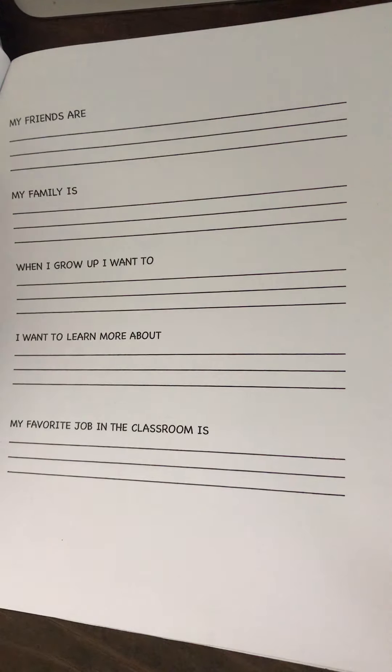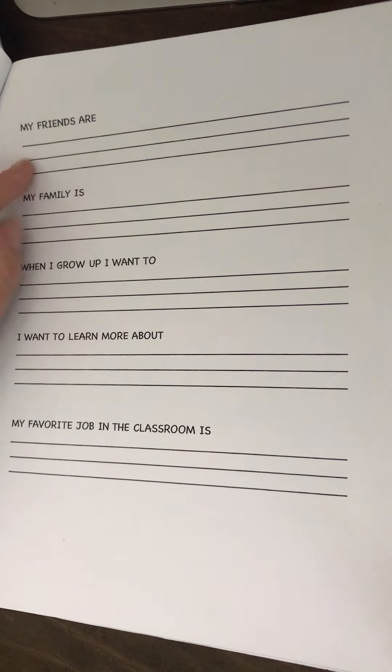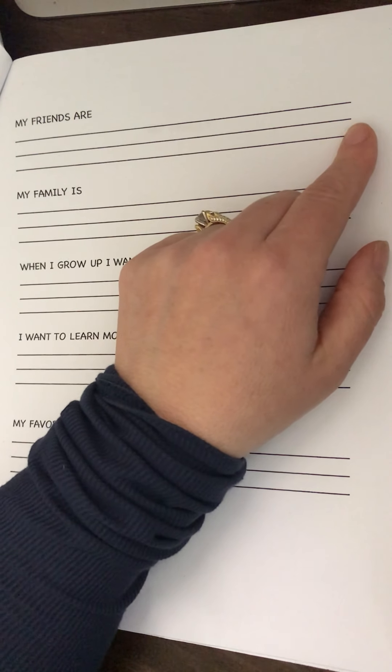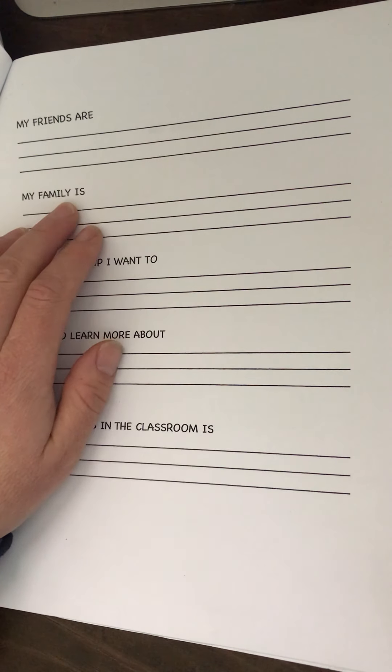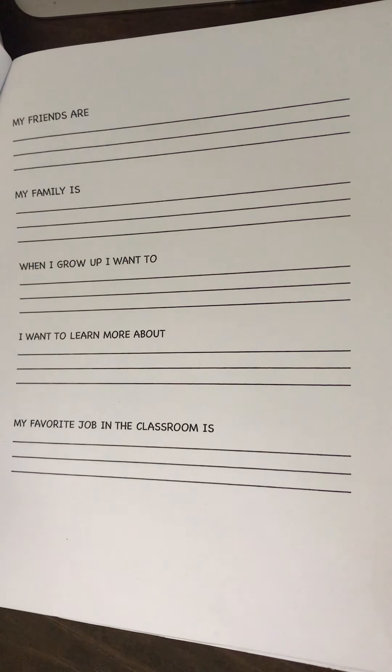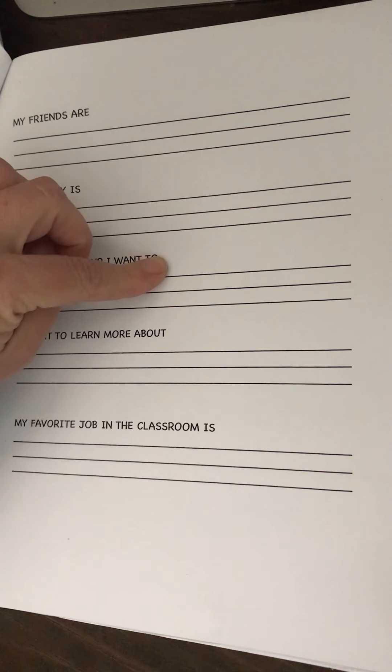This is the fun part, my favorite part. My friends are - this is where you just ask them who are your friends, and then you write it down for them. Don't say anything, don't mention someone maybe they forgot. Just write down what they say. Who is in your family? Just write down what they say. If they skip someone, oh well. Just, you want their exact wording.